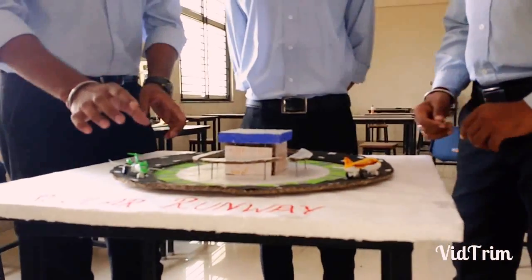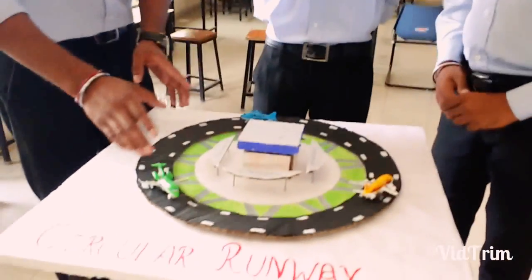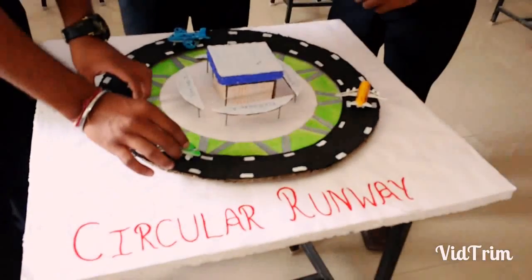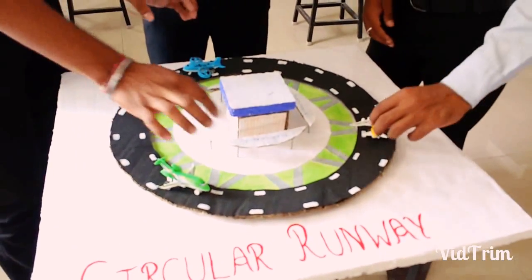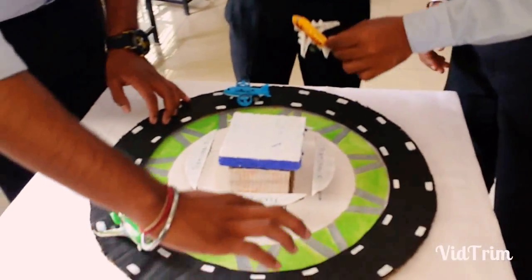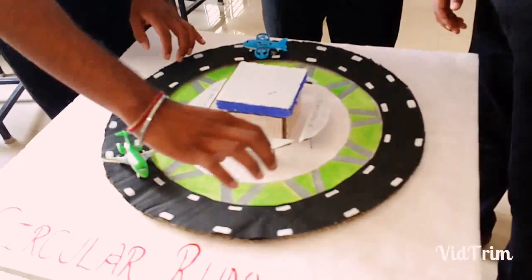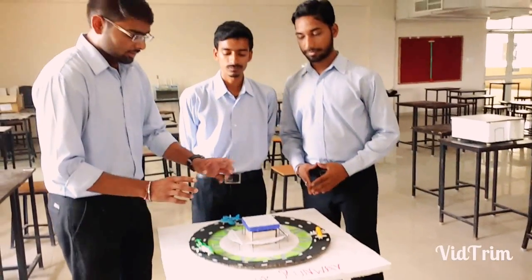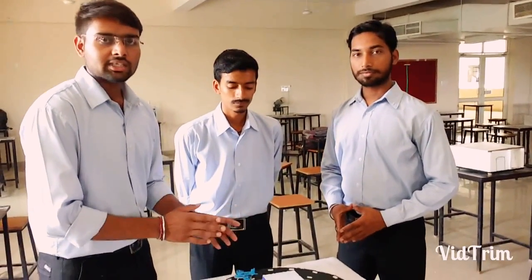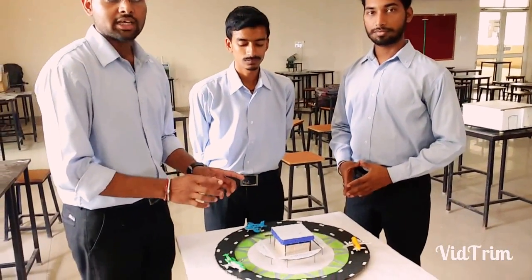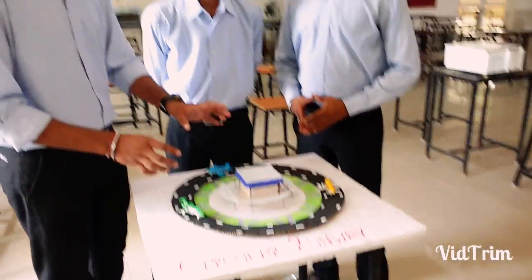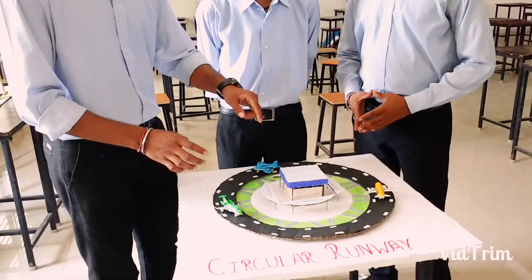The gravitational force and centrifugal force will be managed by the super-elevation. This is the taxiway — when the aircraft lands, it will exit through the taxiway. In an ordinary runway, we have to do an air survey for 5 to 7 years, which is a very long process. In this runway, there is no such headache because it is a 360-degree runway.